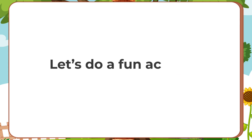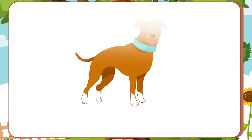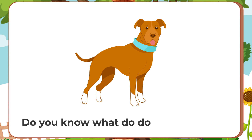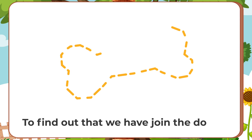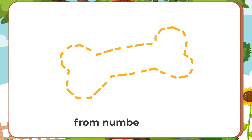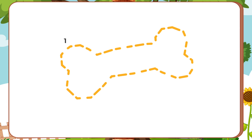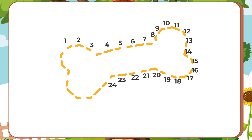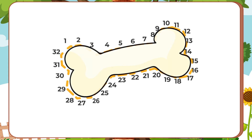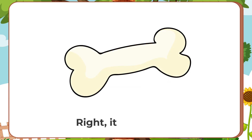Now, let's do one more fun activity. Look at the picture. What is it? Yes, it's a dog. And do you know what the dog likes to eat? To find out that, we have to join these dots from number 1 to 32. So, let's start. Let's join the dots: 1, 2, 3, 4. Now, what is the picture? Right, it's a bowl.